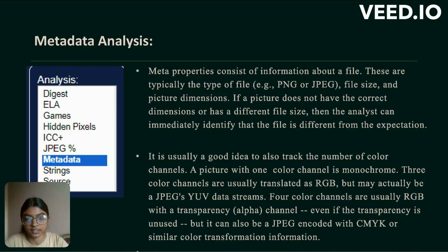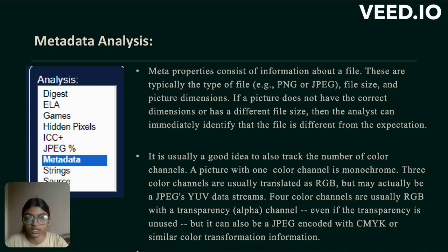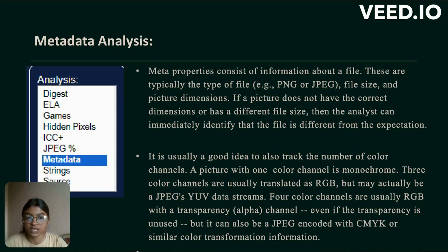Metadata analysis: meta properties consist of information about a file, typically the file type such as PNG or JPG, file size, and picture dimensions. If a picture does not have the correct dimensions or has a different file size, the analyst can immediately identify that the file differs from expectations. It is also useful to track the number of color channels. One color channel means the image is monochrome; three color channels are usually RGB (red, green, blue); and four color channels can be RGB with a transparency alpha channel, or a JPEG encoded with CMYK color transformation.